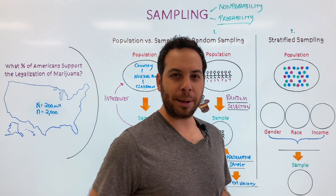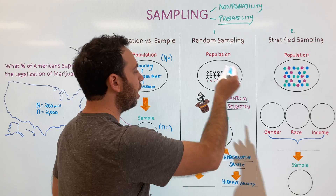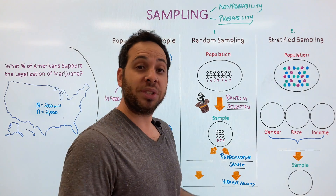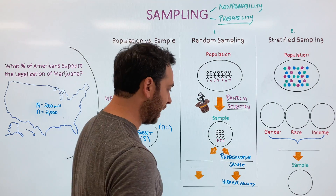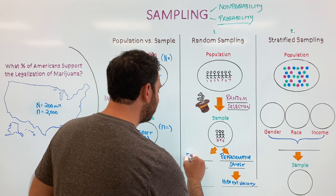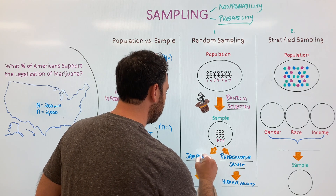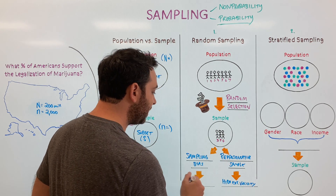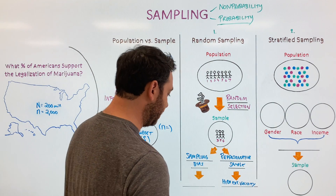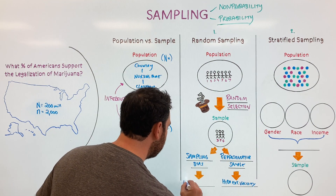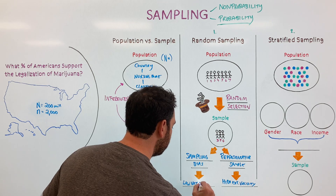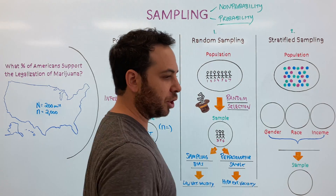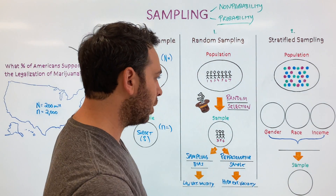But what if your sample isn't representative of the population? Let's say 50% of your population is women, but your sample only has 10% women. That's going to be a biased sample — we label this as sampling bias. Because of sampling bias, instead of having high external validity, this results in low external validity. In other words, we won't be able to generalize our results to the population, and this leads to a lot of errors in our study.